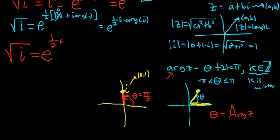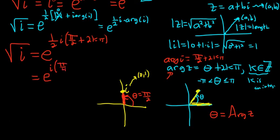So the square root of i is equal to e to the 1 half i, and then we have the argument of i. Theta is pi over 2, then we just have the 2k pi. So it would be pi over 2 plus 2k pi. This would be equal to e, I'm going to leave the i on the outside, and distribute the 1 half. This would be pi over 4, because 1 half times pi over 2 is pi over 4, plus 1 half times 2k pi, you just get k pi.